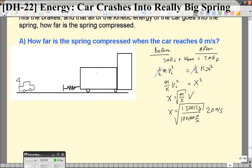When you put all that in a calculator, you get a distance that the spring compresses of 2.45 meters. The faster you go, the more the spring is going to compress.